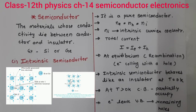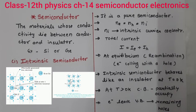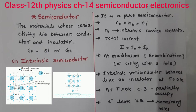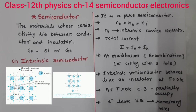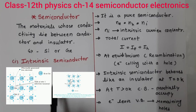Now intrinsic semiconductor — semiconductor ko purity ke basis par do types mein divide kiya gaya hai: intrinsic and extrinsic. So firstly we will discuss intrinsic semiconductor. Silicon and germanium dono crystal-like structure ke hote hain. Silicon and germanium mein 4 valence electrons hote hain. Aap dekh sakte hain is diagram mein — ek atom apne around 4 atoms se covalent bond ke through connected hai. Yeh silicon and germanium ka is tarah ka structure hota hai.